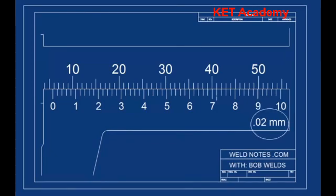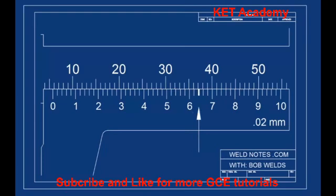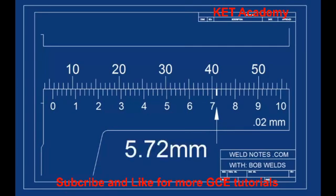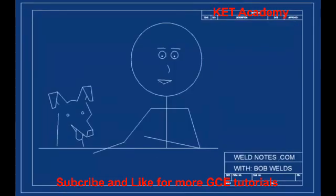Since this caliper measures to 0.02 millimeters, each mark is 0.02mm. Counting up on the vernier scale: 0.60, 0.62, 0.64, 0.66, 0.68, 0.70, then 0.72. So the full reading is five point seven two millimeters.